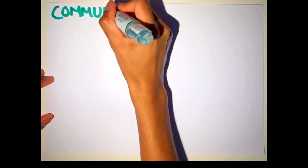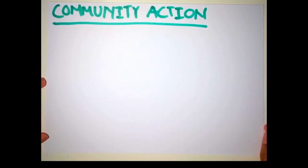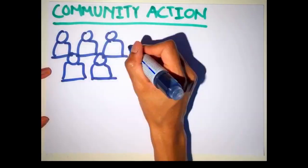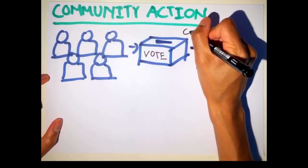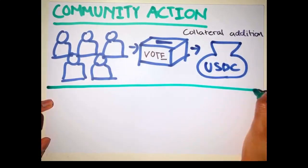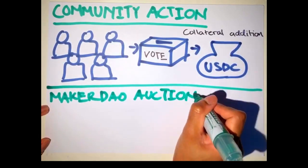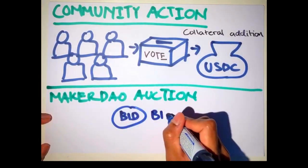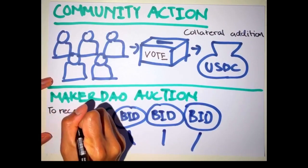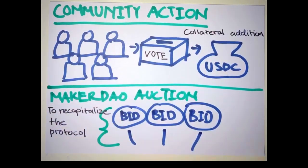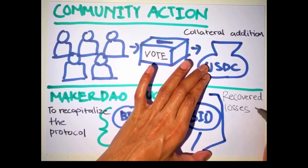The action from the community that followed was to add USDC stablecoin as collateral to give keepers an alternative to generate DAI and also for MakerDAO to diversify its risk. Automatic recapitalization of MakerDAO was set in motion to cover losses. The auction was successful. MakerDAO was recapitalized and the protocol recovered more than $5 million in losses.